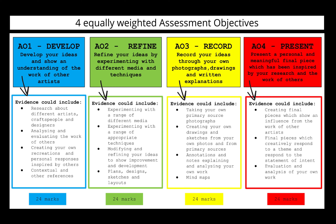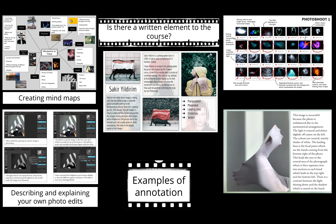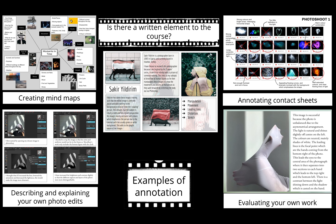GCSE photography has four assessment objectives, all worth the same amount of marks. You're marked on your research, the quality of your photographs, how well you experiment with different techniques and media, and also your ideas and final pieces. You will also be required to complete some writing in photography — for example, annotating your contact sheets, describing and explaining your digital edits, and completing research on the work of other photographers.